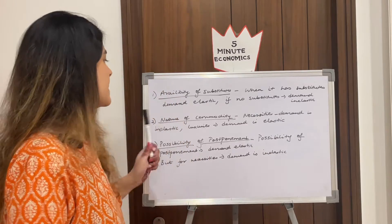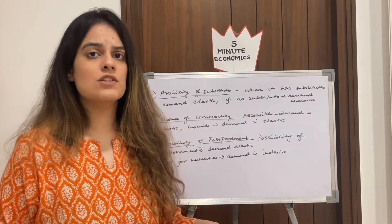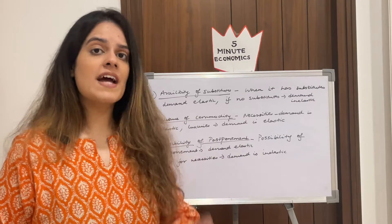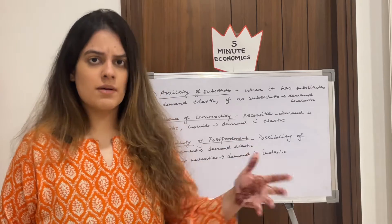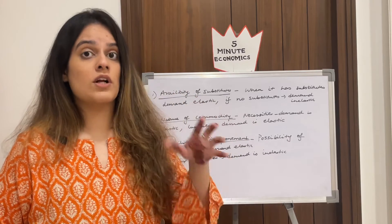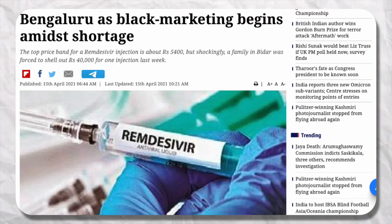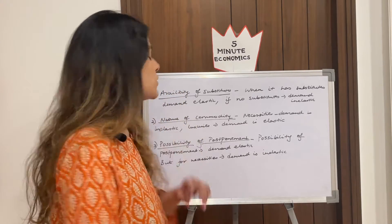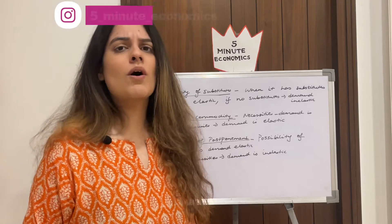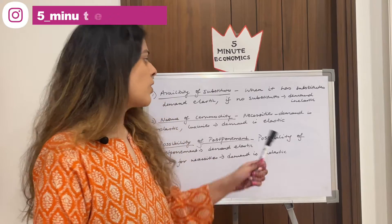Secondly, the nature of the commodity. A commodity can be a necessity or a luxury. Necessities include food and medicines, and their demand is typically inelastic. For example, during COVID times, one injection of remdesivir was costing 50,000 rupees, yet people were buying it for survival. Similarly, we will want food even if it's expensive. So the demand for necessities is inelastic.